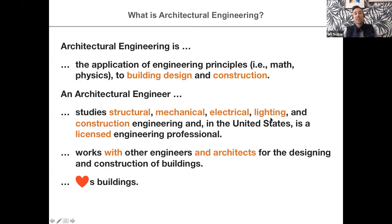An architectural engineer studies a number of different sub-disciplines. They study structural engineering, mechanical systems, electrical, lighting, and construction engineering. In the United States, we become licensed engineering professionals, which gives us — just like a medical doctor's license — the right to practice as an architectural engineer. We work across a number of different teams and disciplines with other engineers and with architects, all of the time, in the space of designing and constructing buildings.